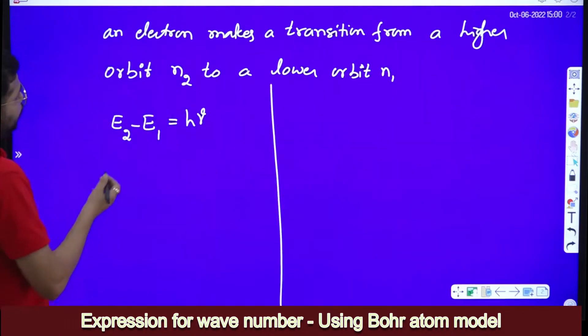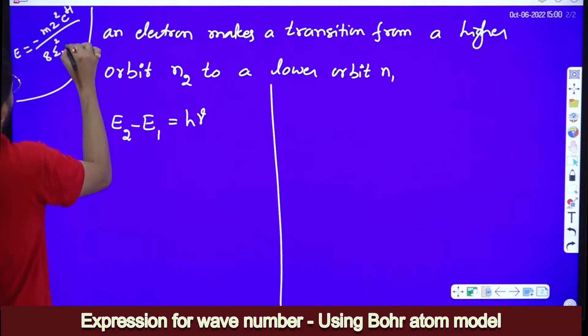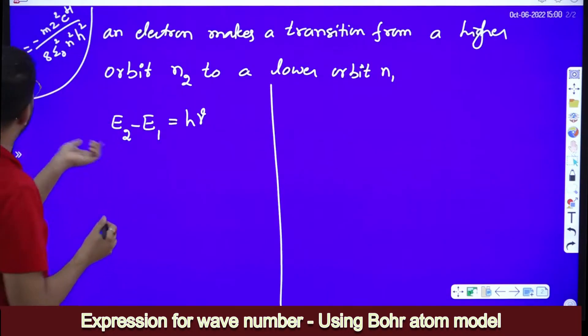Now, what is E2? We know the expression for energy: energy equal to minus M Z square E power 4 divided by 8 epsilon naught square n square h square. This is the equation for energy.